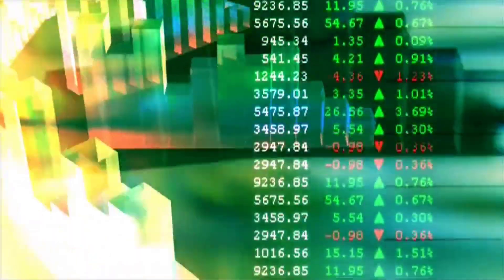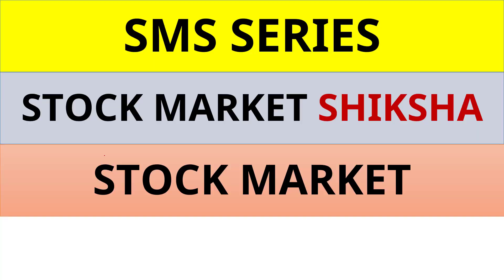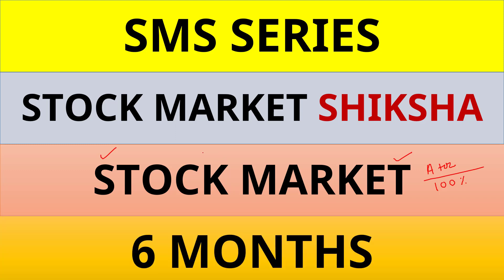Whenever we do any work, we say we are going to complete it A to Z — A to Z means complete work, that is 100 percent. So in this series, we are going to talk about the stock market from very basic things to advanced, 100 percent.